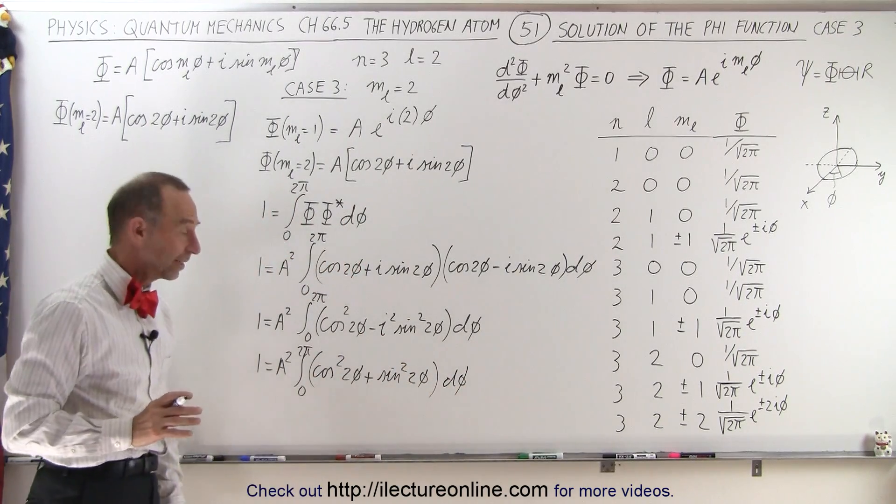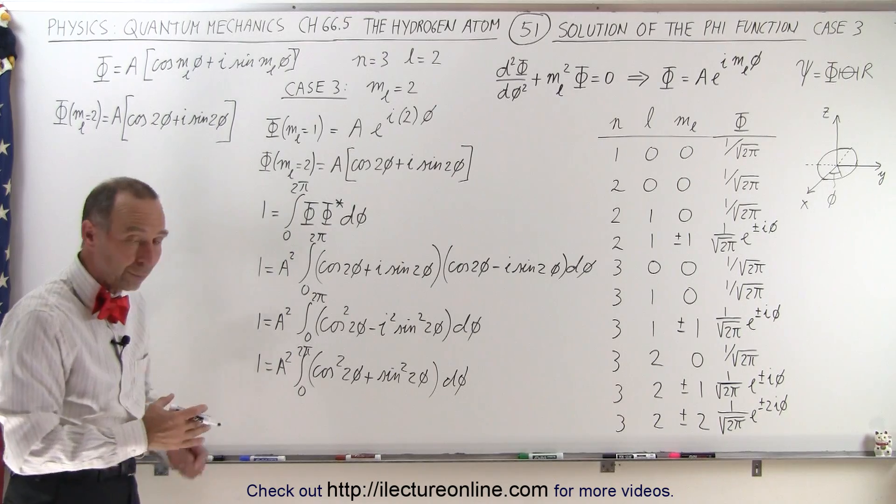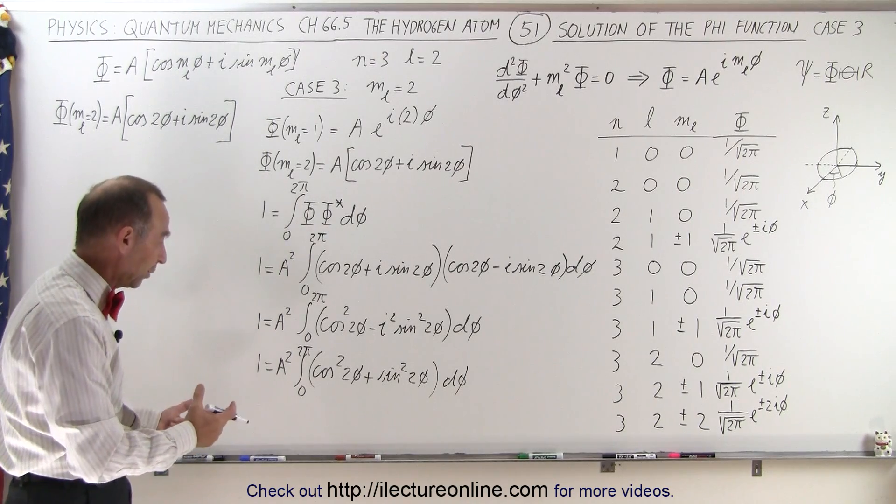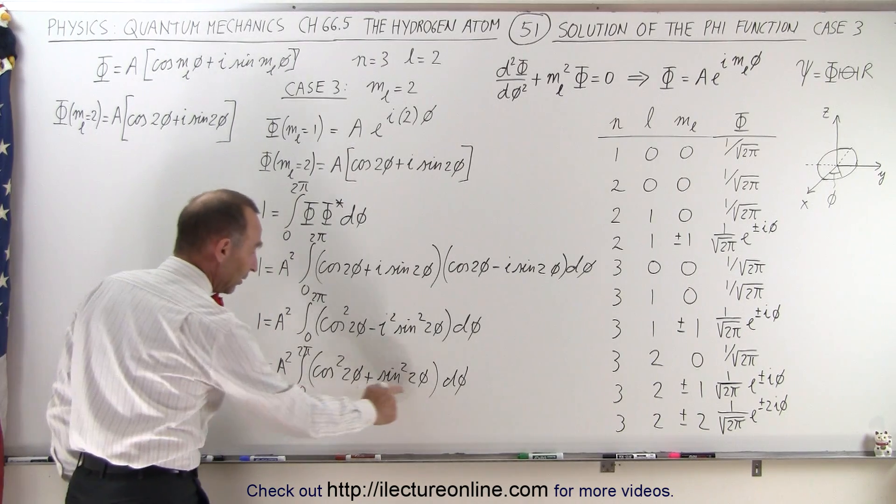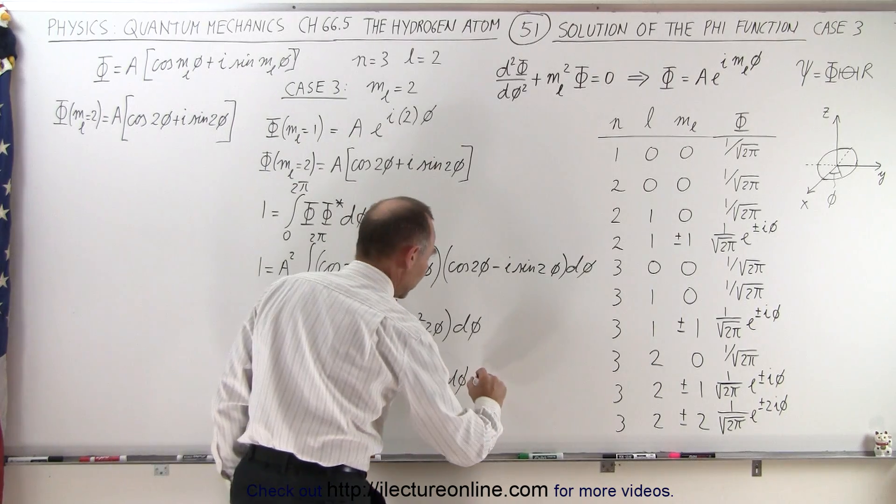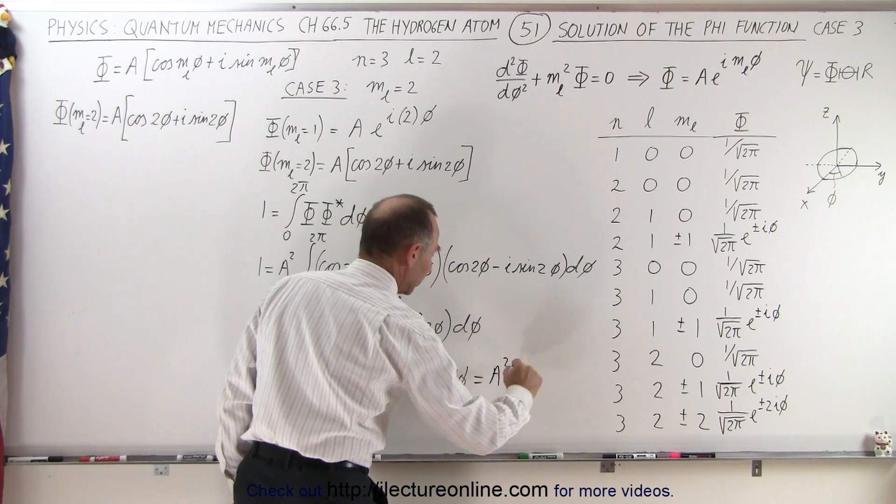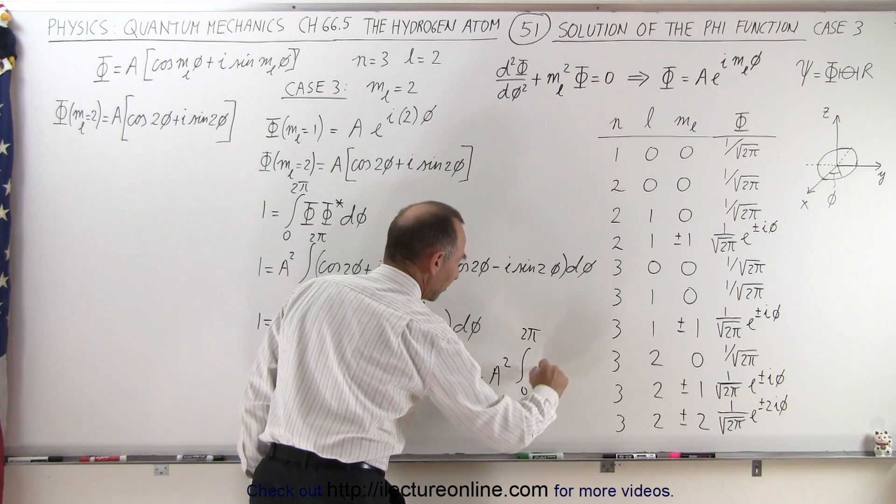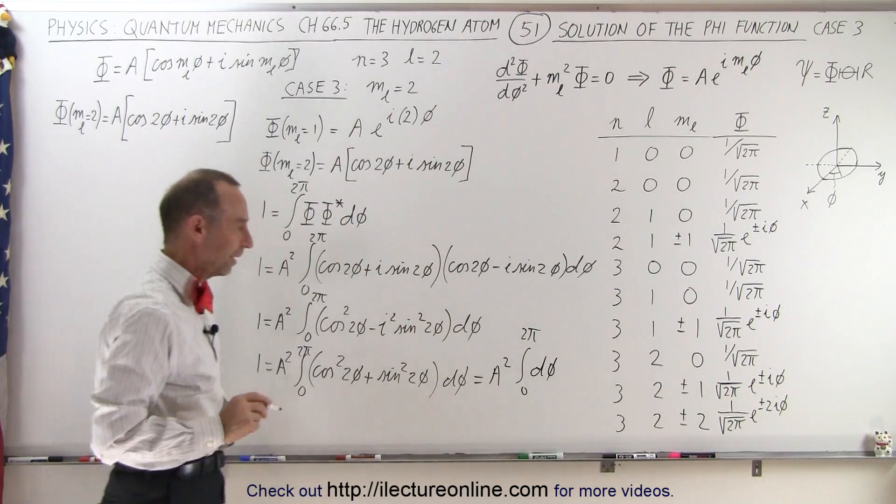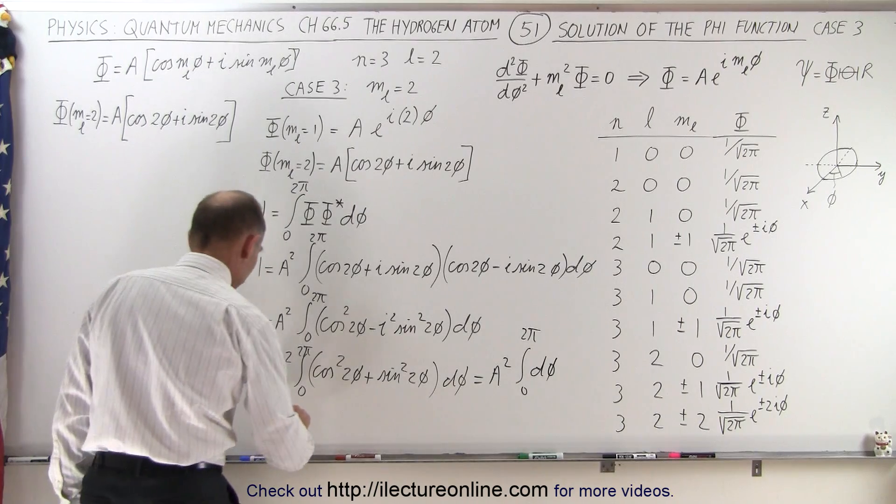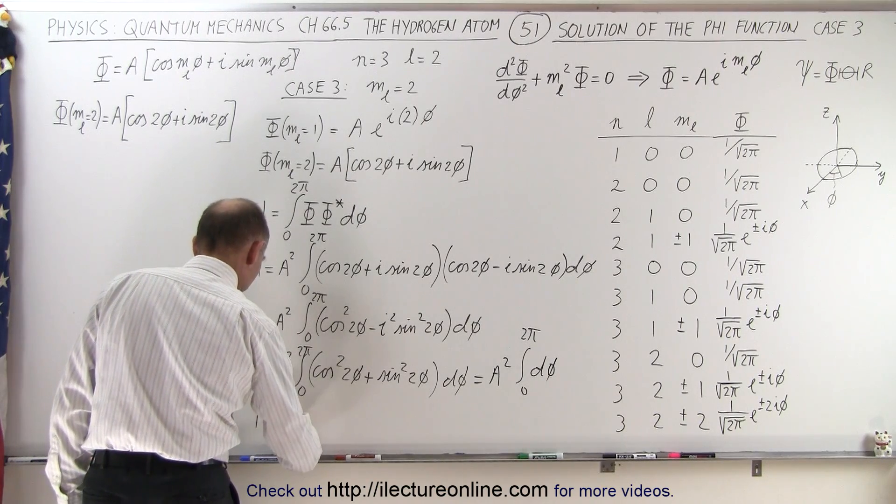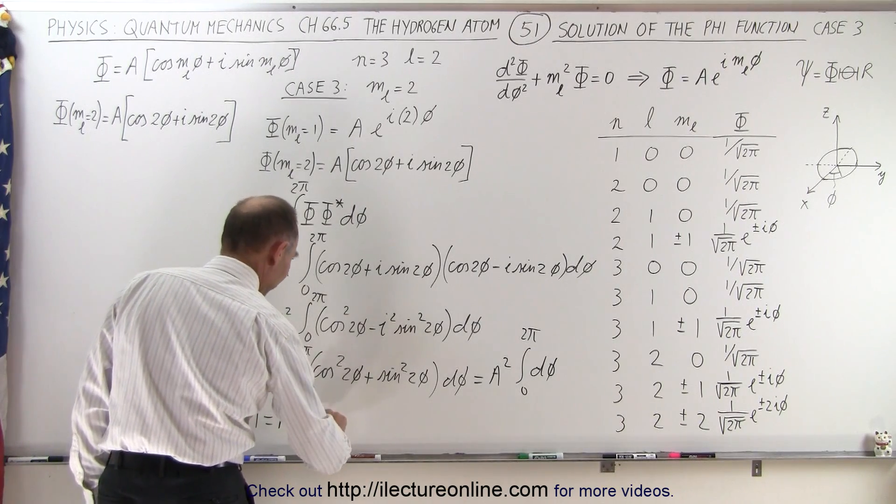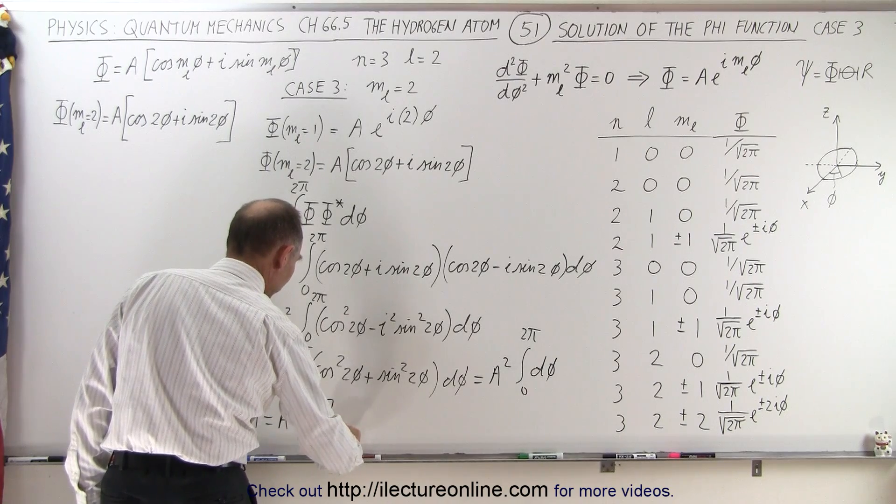And just like it did in the last case with m sub l equal to 1, it makes no difference if m sub l is equal to 1 or m sub l is equal to 2. This here is still going to be equal to 1, so this becomes equal to a squared times the integral from 0 to 2π of 1 times dφ. And of course, when we integrate, we get 1 is equal to a squared times φ evaluated from 0 to 2π.